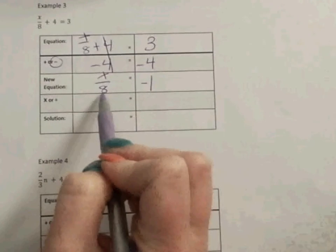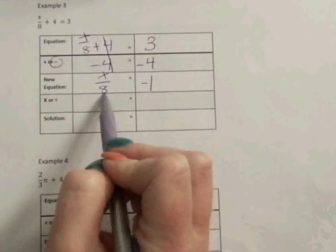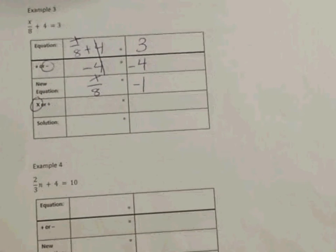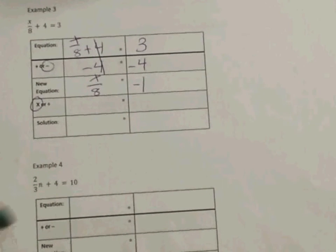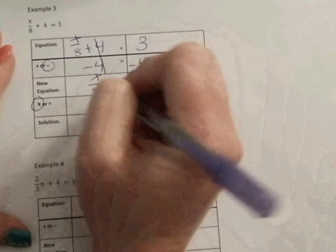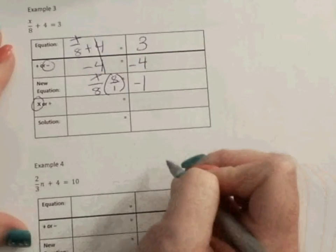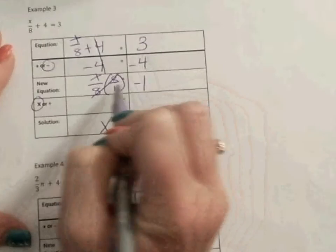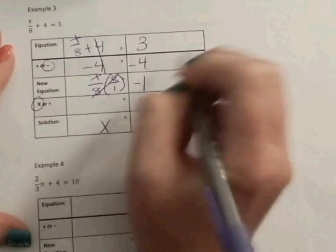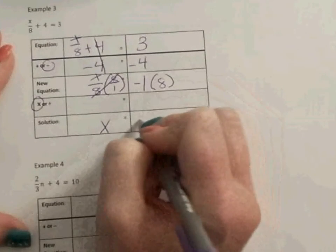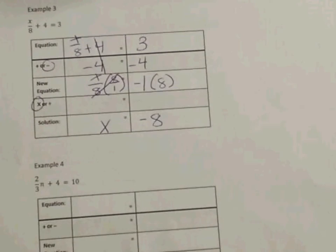Now, because this 8 is in the bottom and it is a fraction, that means that they are currently dividing. So the opposite of dividing is going to be multiplication. When we multiply, what I like to do is I set it up, and I'm kind of going to skip this box right here because I do it all up here in the top. I'm going to multiply it by an 8 over 1. My 8s will cancel out, and I'm going to be left with an x. Over here, since I multiply this side by a positive 8, I'm going to multiply this side by a positive 8. And a negative 1 times 8 is a negative 8, so x equals negative 8.